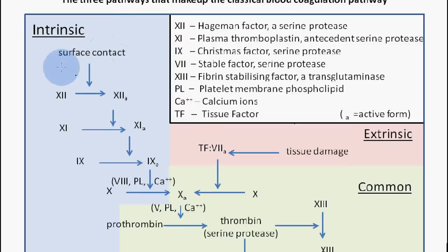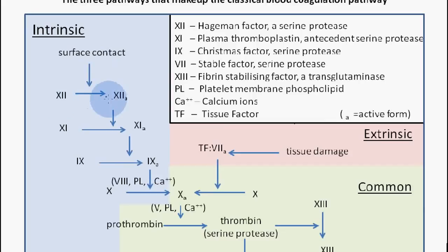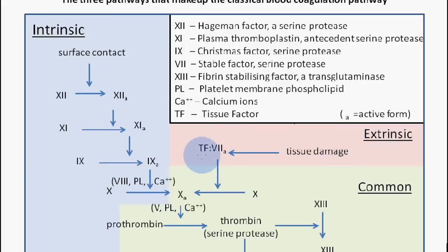The intrinsic pathway is basically due to surface contact. If we have damage to a blood vessel, we have plasmin which recognizes it and initiates factor 12 to be converted into factor 12a. In the case of the extrinsic pathway, we have some form of tissue damage which leads to the formation of tissue factor, which converts factor 10 into factor 10a. But let's talk about the intrinsic pathway first.